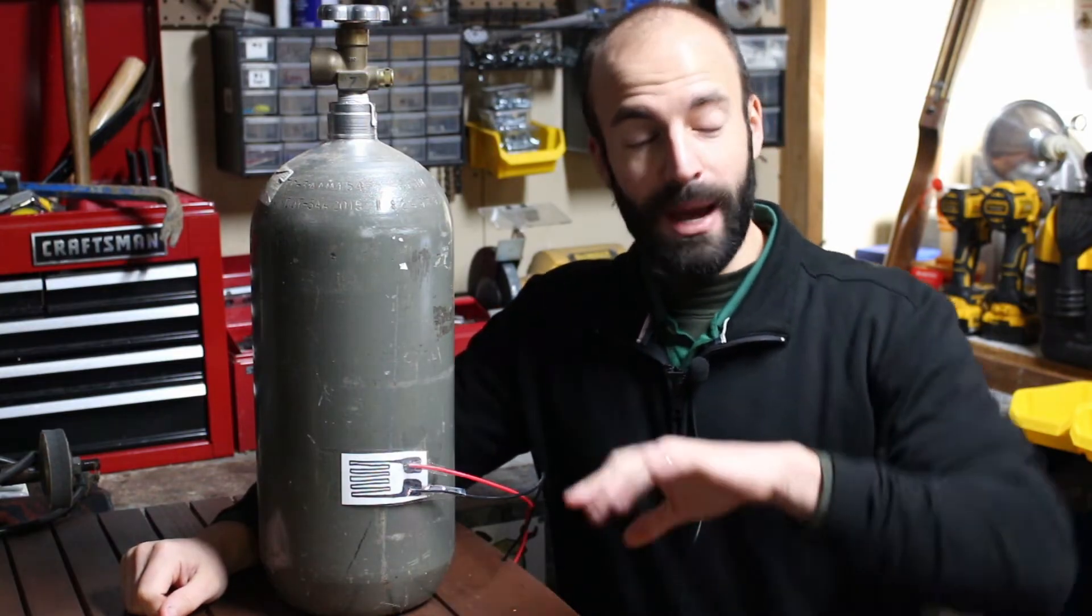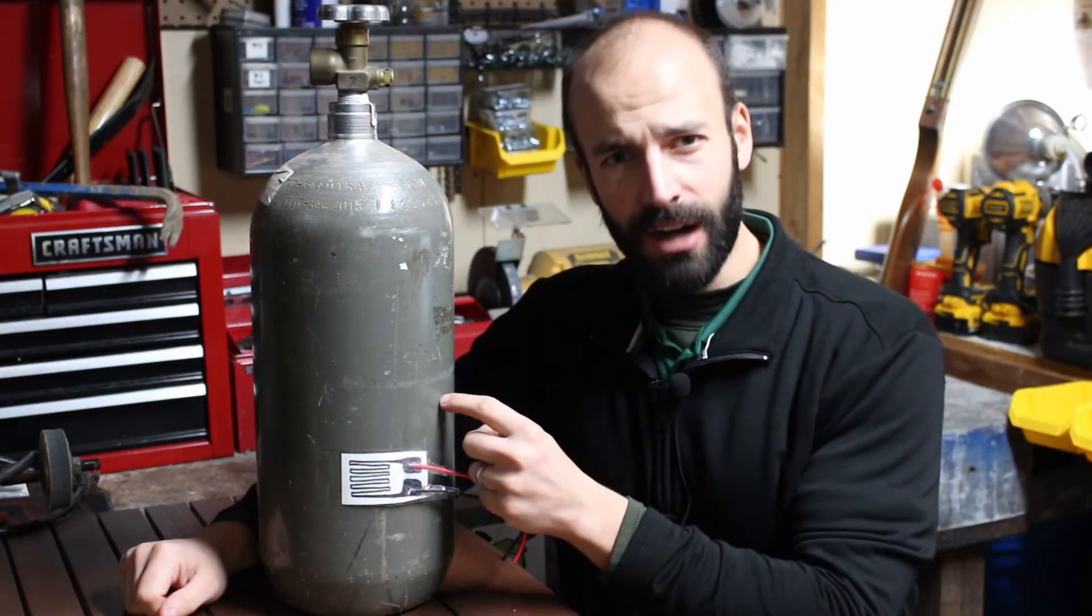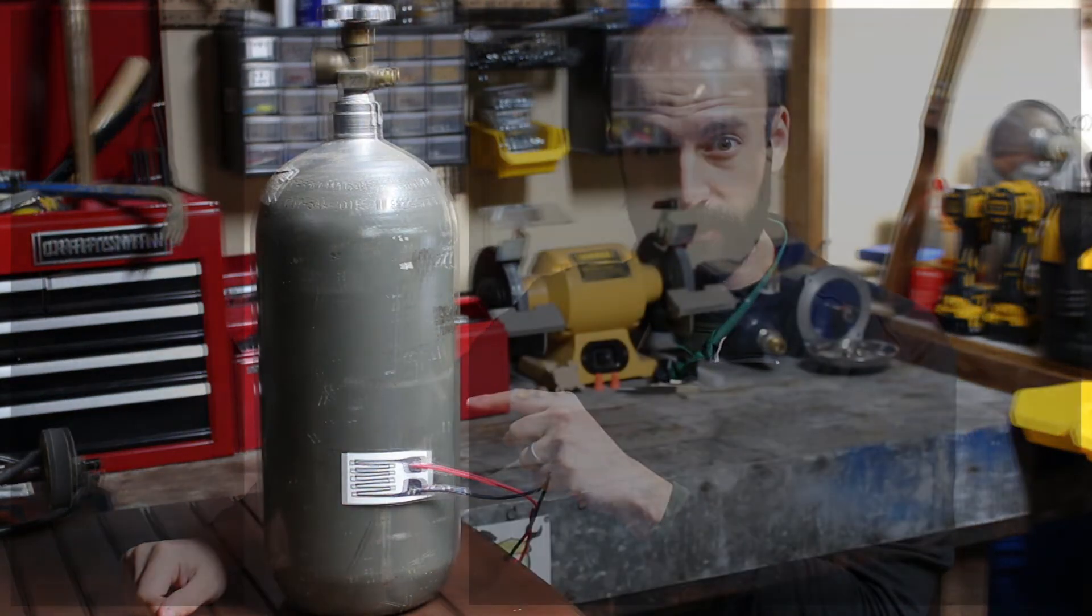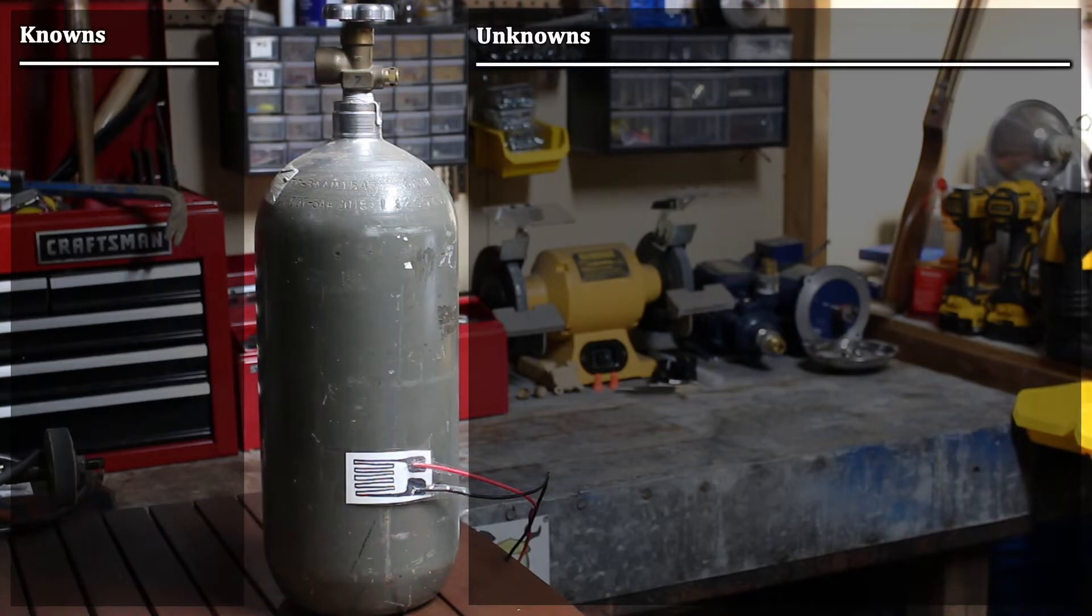We first need to go back to classical mechanics and model this as something simple that we recognize, like a cylindrical pressure vessel. Modeling this tank as a thin-walled cylindrical pressure vessel, we can define some geometric parameters and material properties, and then solve for the unknowns using classical mechanics.